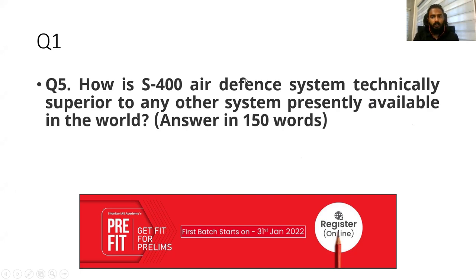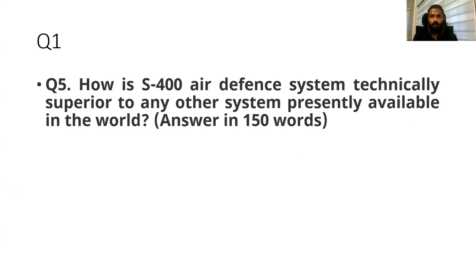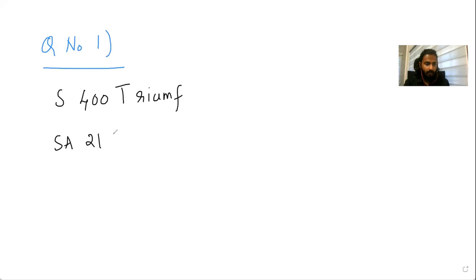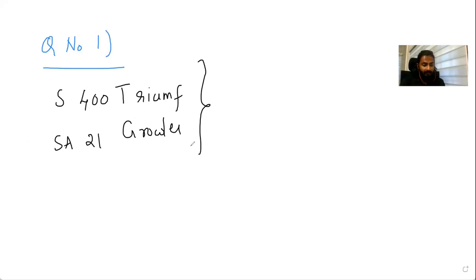The question asked how the S-400 air defense system is technically superior to any other systems presently available in the world. To start answering, introduce what S-400 is. S-400 Triumf is what Russia calls it, or NATO calls it SA-21 Growler. Begin by writing what S-400 is — this is a mobile surface-to-air missile defense system.